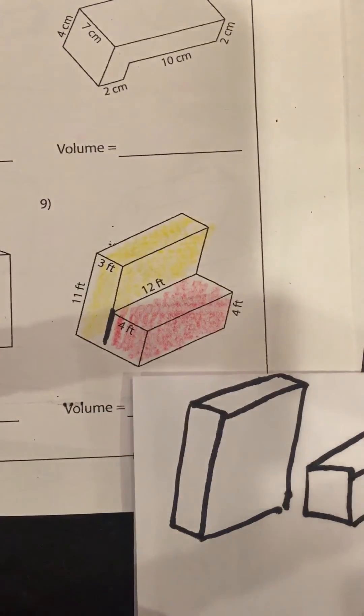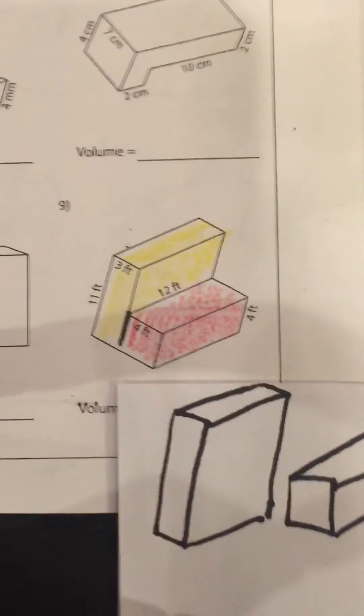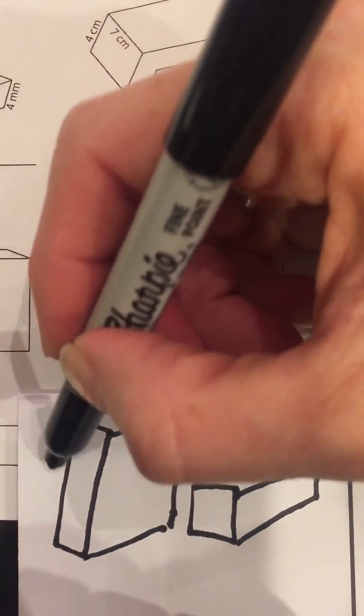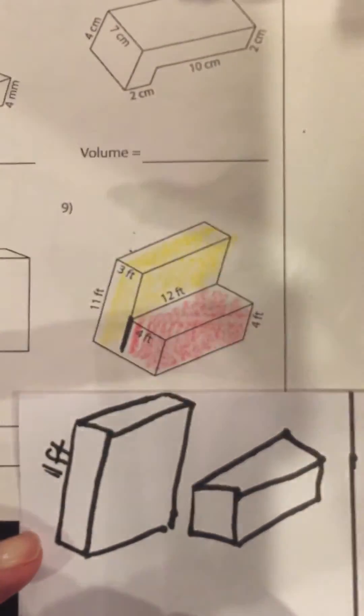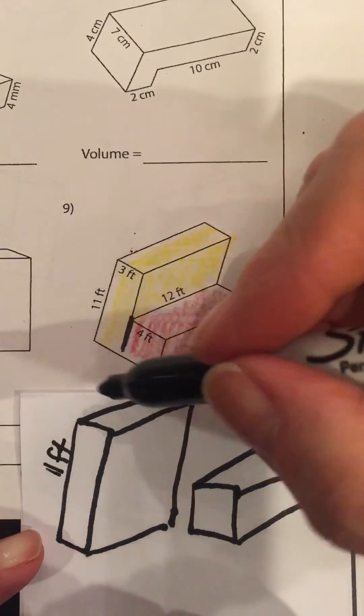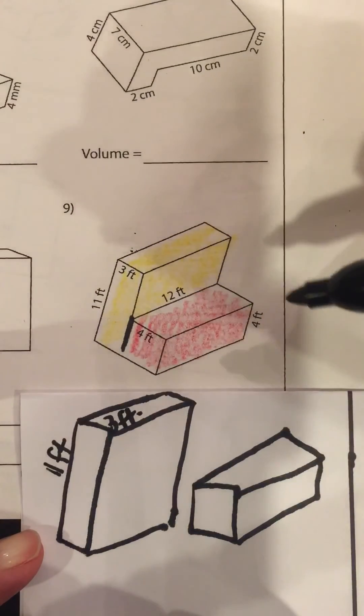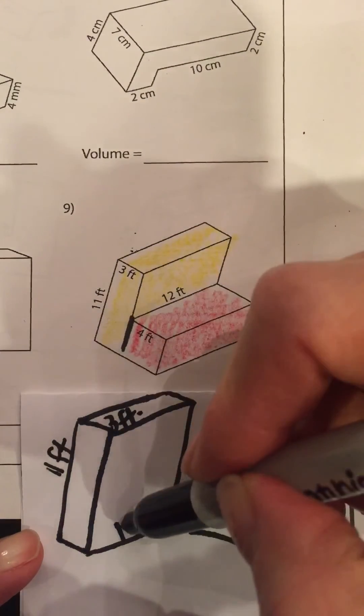Okay, start labeling our dimensions. What do we know? Well we know that this piece right here is 11 feet high, we know that it's three wide, and it is 12 feet long. That one was easy.